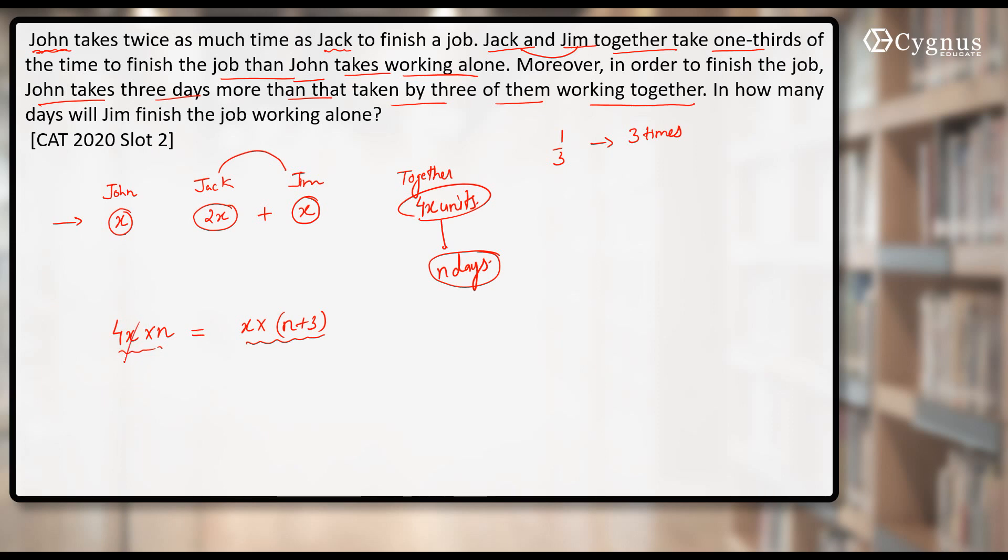This was also the total work and this is also the total work. Let's equate them. When you equate them, this x will be cancelled out. After solving this, what do you get? 4n is equal to n plus 3. n goes on that side. You get 3n is equal to 3. That means n becomes one day.